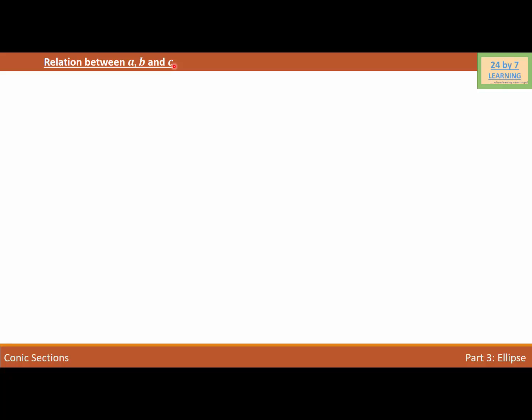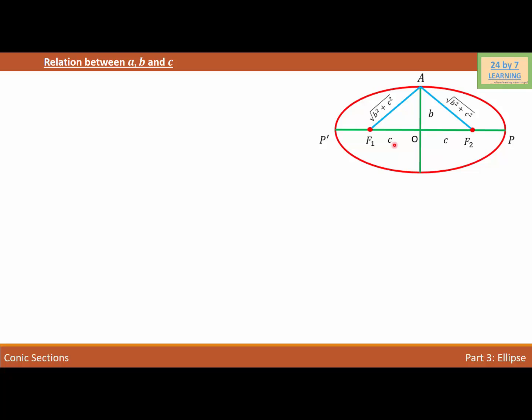In order to establish the relationship, I'm going to consider an ellipse. Here's a picture of the ellipse where P and P' are the vertices of the ellipse, which form the major axis, and A is the end of the minor axis. When the major axis and minor axis intersect, they intersect at the center of the ellipse, which is point O.